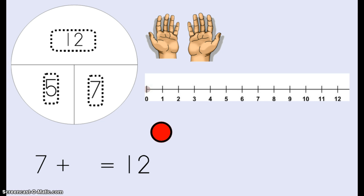When we write it in a number sentence it's the same thing. 7 is one addend plus our missing addend which we figured out is 5 equals 12 which is our whole or our sum.